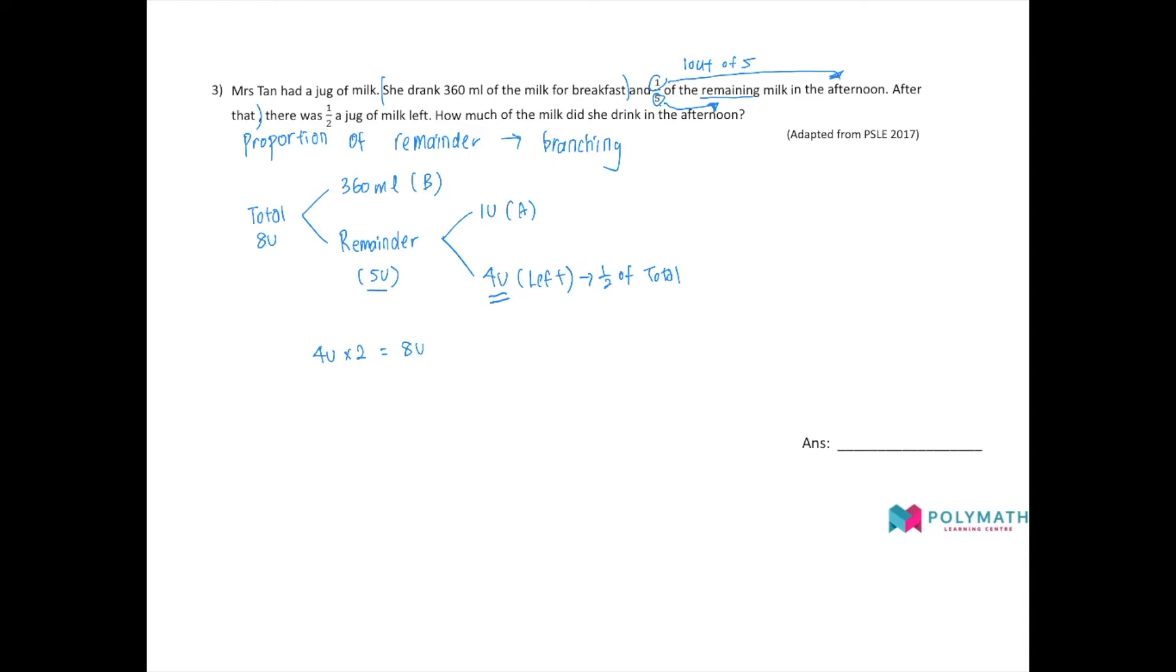And five units is the remainder. So comparing this eight unit and this five unit, there is three units missing. All right, so these three units would be the portion that is drank in the morning. All right, so now we can establish that three unit is equal to 360 ml. One unit is actually 360 ml divided by three, which will give you 120 ml. All right, so this is one unit.